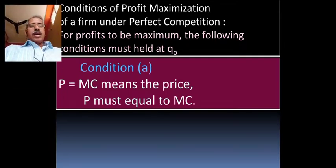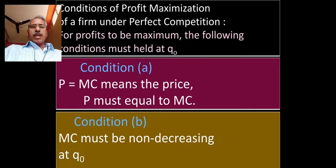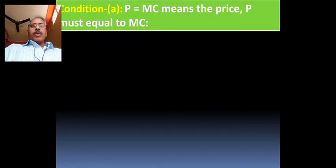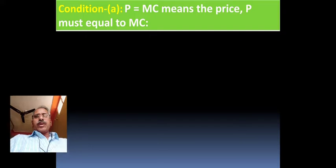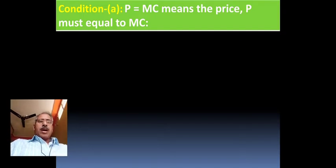Condition B: marginal cost must be non-decreasing at Q0. At Q0, the quantity of production, the marginal cost should be non-decreasing. Decrease should not happen.